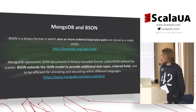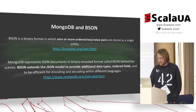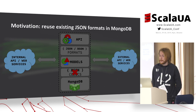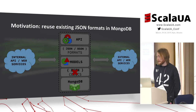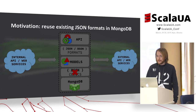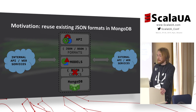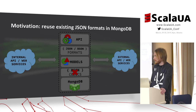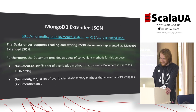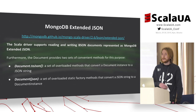The previous errors were expected because BSON contains ordered key-value pairs. The main idea is pretty straightforward: MongoDB stores records as BSON documents, and BSON is binary JSON. A typical application already has JSON formats for the models, and it should be possible to reuse existing JSON formats to read and write these models from and to MongoDB, and skip implementation of BSON codecs. The Scala driver supports reading and writing BSON documents represented as MongoDB extended JSON.